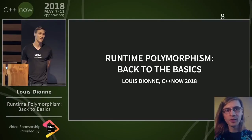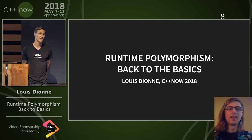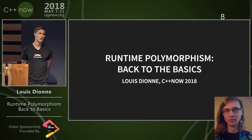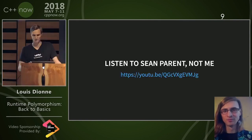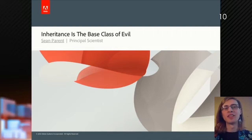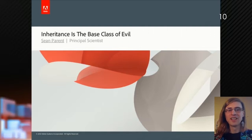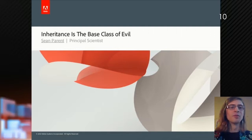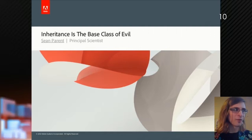A few years ago, Louis Dionne gave a really fantastic talk about runtime polymorphism at C++ Now, and a lot of the ideas there are the basis for parts of this talk. He says to listen to Sean Parent instead. A few years prior, around 2012, Sean Parent did a great talk called 'Inheritance is the Base Class of Evil,' and has done many similar talks since. The idea is that there are a lot of problems with inheritance as a facility for doing dynamic polymorphism in C++, and there are ways we can try to alleviate some of these.